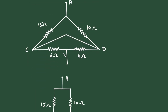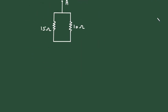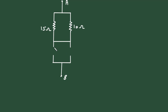Also this 6 ohm and 4 ohm are connected in parallel. So 6 ohm and 4 ohm — and this is point B — here this is 6 ohm and this is 4 ohm.